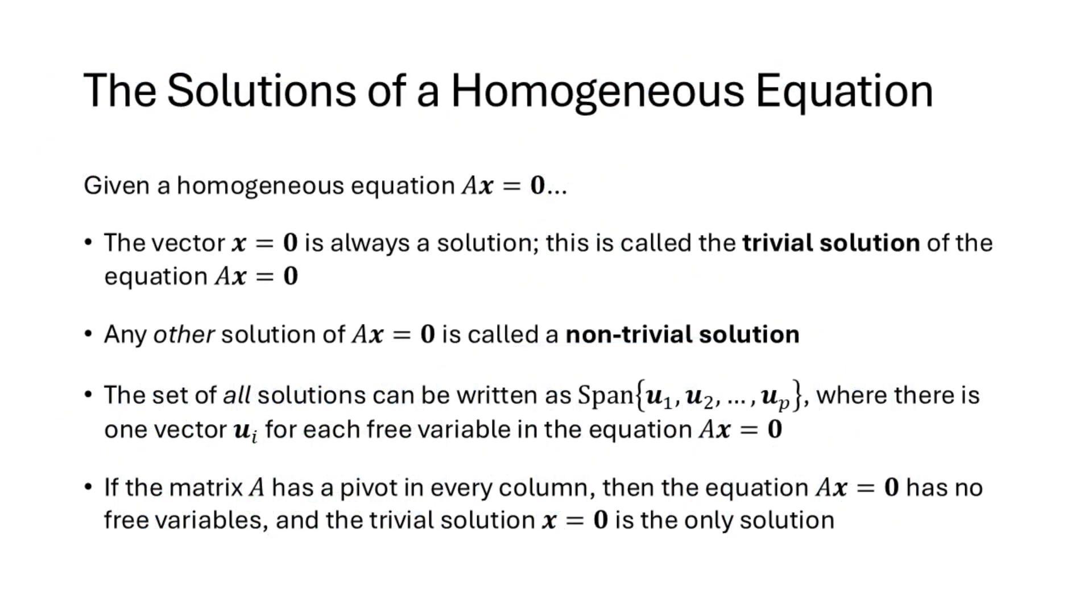So given a homogeneous equation Ax equals zero, the vector x equals zero is always going to be a solution. Putting in zero for all of the variables is always going to work because the right-hand sides of your equation are all zeros. This is called the trivial solution. So the interesting question for a homogeneous equation is are there any non-trivial solutions? Are there any solutions other than just putting in zeros for the x's that make the left-hand side equal the right-hand side?